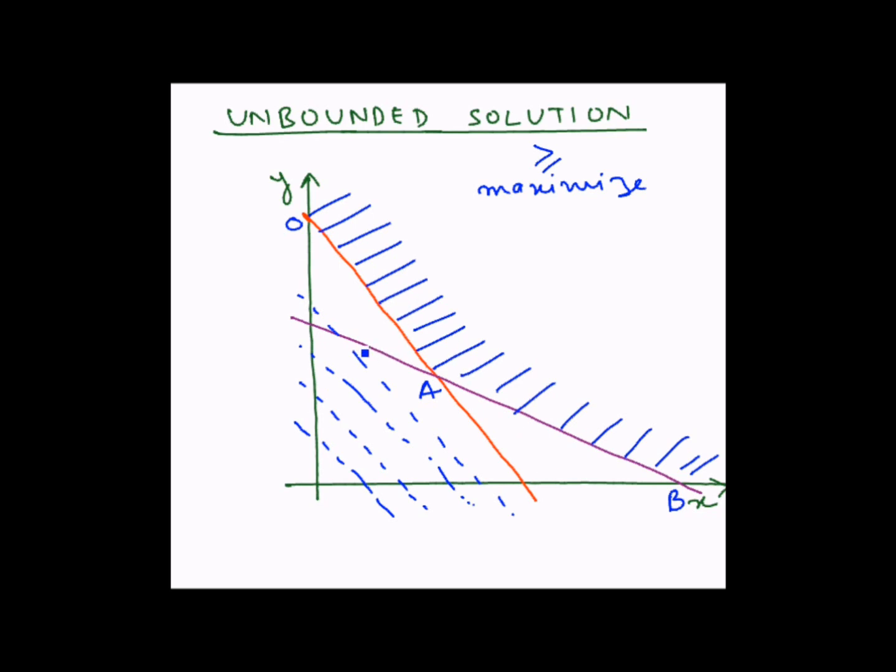So if we try to draw these parallel lines and try to reach the farthest point, as you know that the feasible solution region has an upper limit which is infinitely large, the solution would be lying at an infinitely large point. So such a solution is known as an unbounded solution.